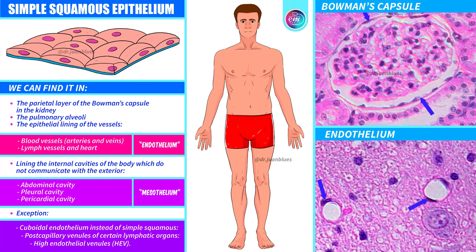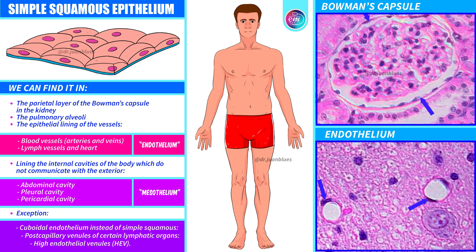To finish this section, I have prepared two histological sections for when you study — this is how you will see them under the microscope. Here is the Bowman's capsule, and we can see the single layer of squamous epithelium. And here is the endothelium, which covers the inside of the vessels — one single layer, simple epithelium with a flat shape.